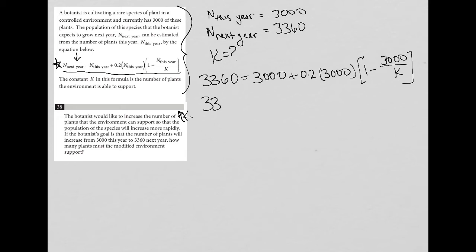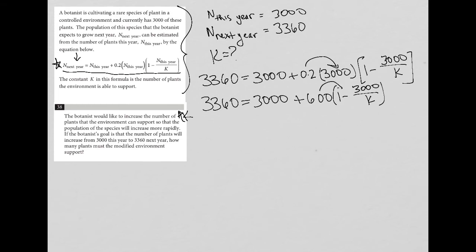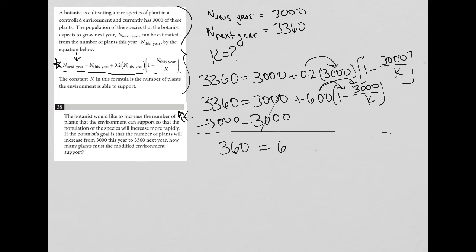Simplifying, I have 3,360 equals 3,000 because I multiplied before adding: 0.2 times 3,000 is 600, so plus 600 times the quantity 1 minus 3,000 over K. Now I could subtract 3,000 from both sides first, which gives me 360 equals 600 times the quantity 1 minus 3,000 over K.